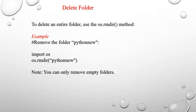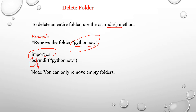If you want to delete an entire folder, use the os.rmdir() method. For example, to remove a folder named 'python_new', first import os, then call os.rmdir('python_new'). These instructions will remove the folder. Note that you can only remove empty folders.